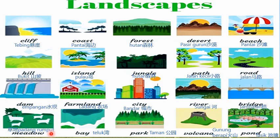Additional landscapes are: bay, park, volcano, and pond.